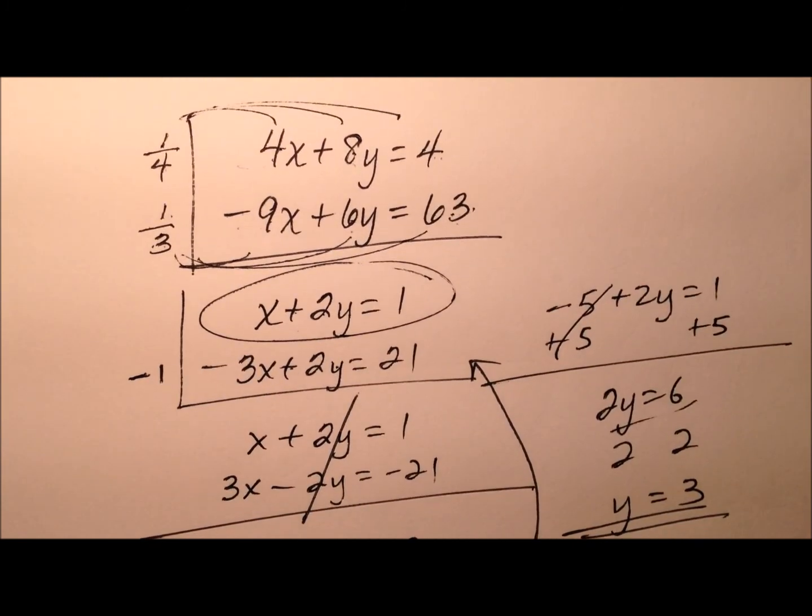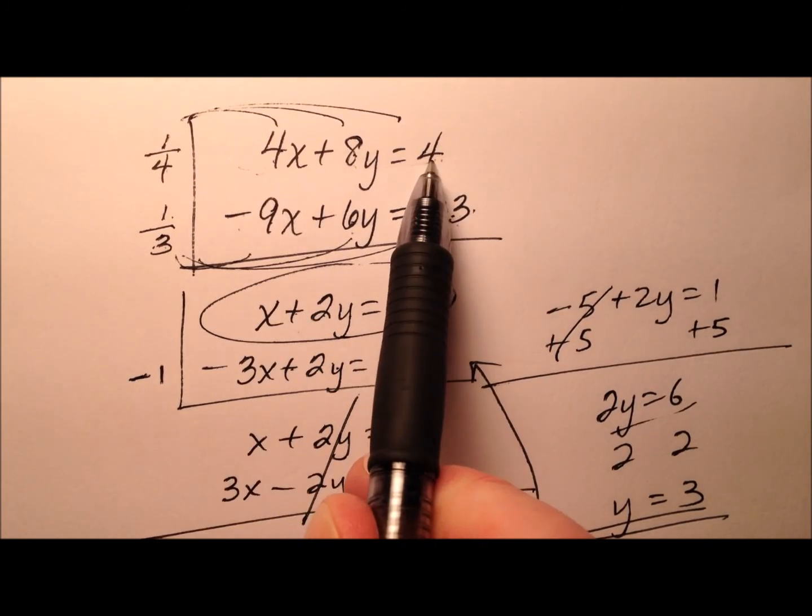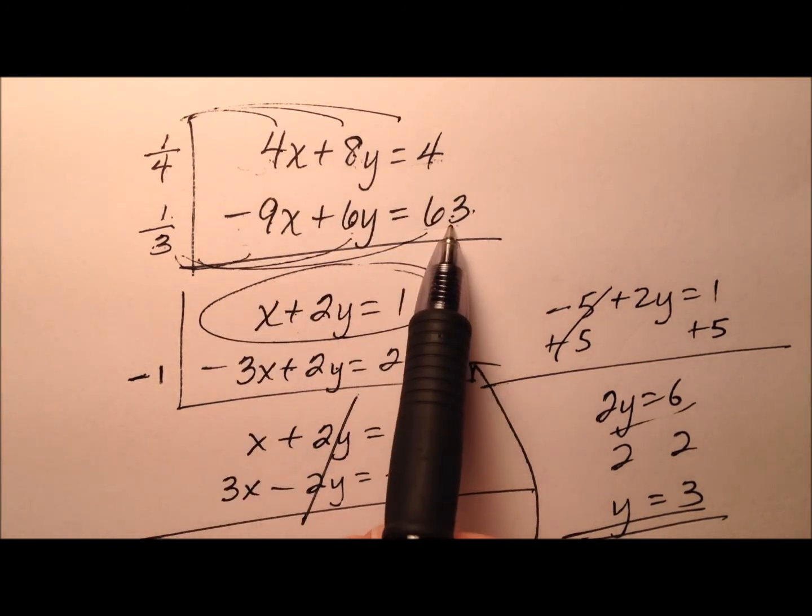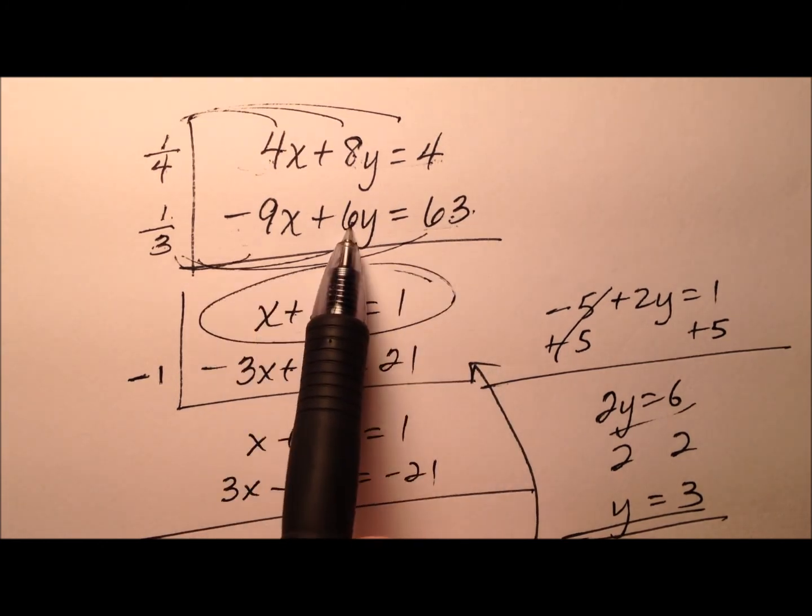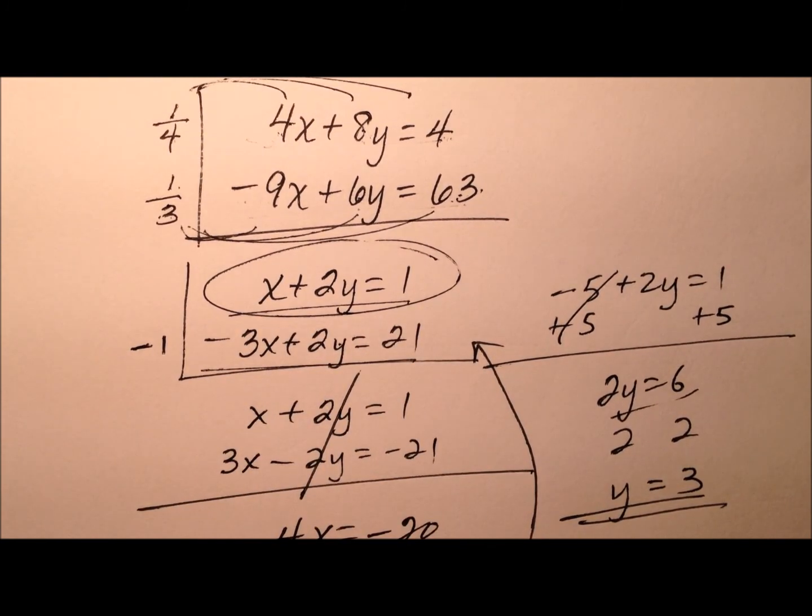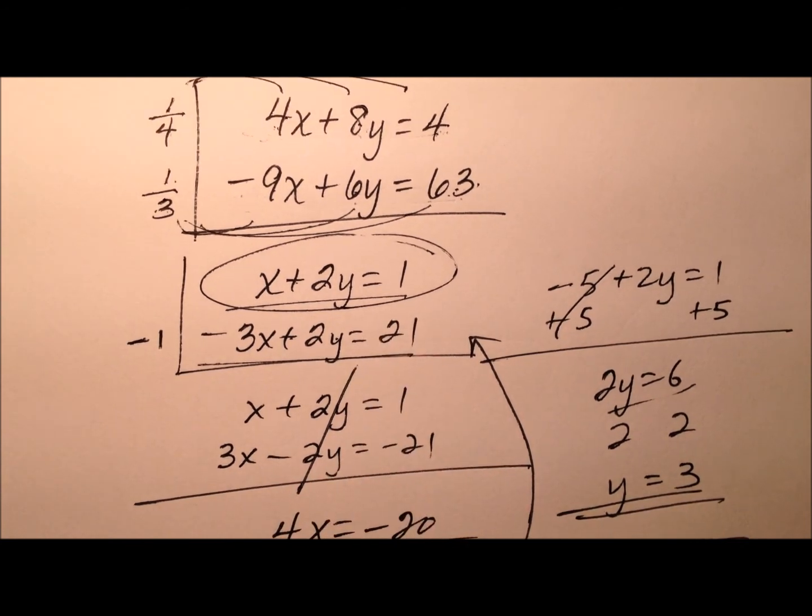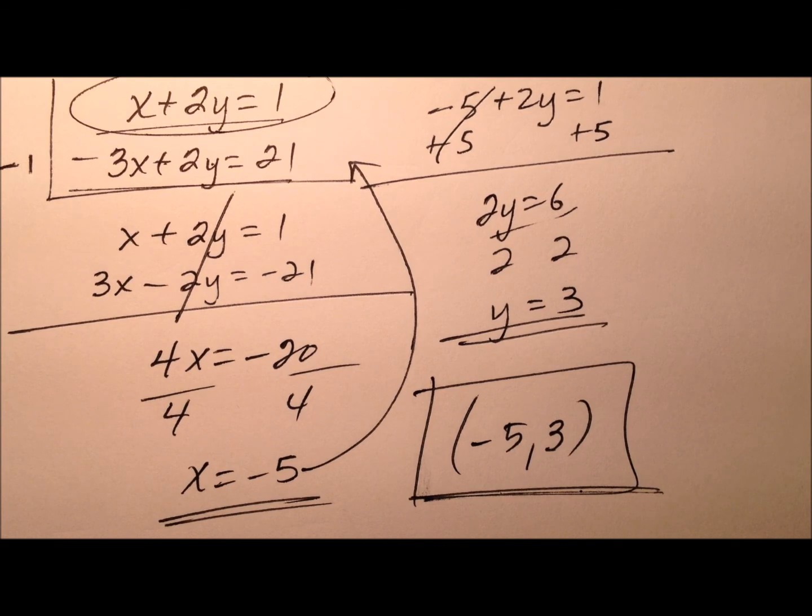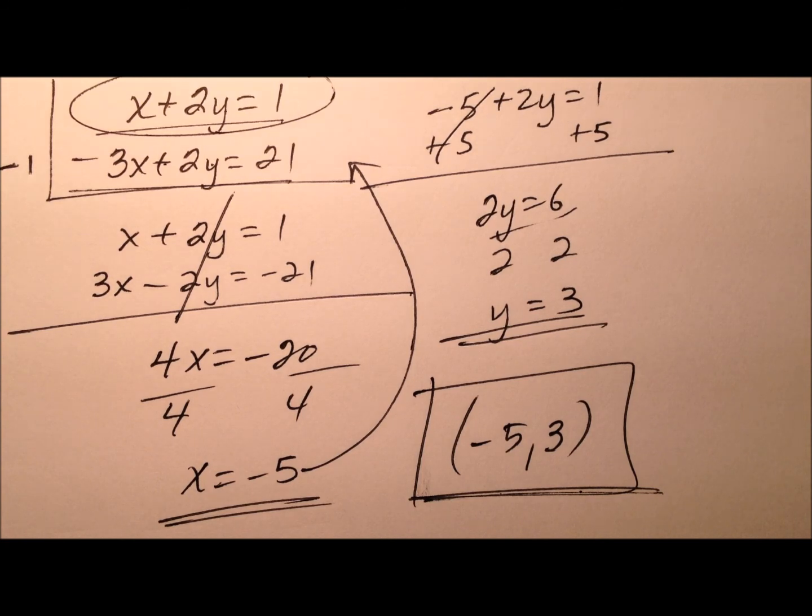And again, the strategy we employed was we saw that the first equation between 4, 8, and 4, I could divide all those terms by 4. And the second equation between negative 9, 6, and 63, I could divide everything by 3. So when we did that, we had equations that were much smaller numerically and a lot more manageable. And then we were able to use our elimination pretty quickly after we had that done. And our solution was negative 5, 3. So again, in the video, we really focused on employing some strategies to make our equations smaller numerically, so they're easier to work with. And you can do that by dividing or multiplying by a fraction.